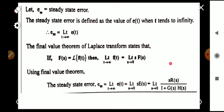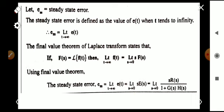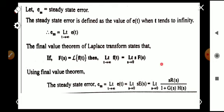We can apply the Final Value Theorem of the Laplace transform here. By applying it, the limit as t→∞ of e(t) equals the limit as s→0 of s·E(s). Substituting the value of E(s), the steady state error E_ss is defined as: E_ss = lim s→0 of s·R(s) / [1 + G(s)·H(s)]. This is the actual steady state error equation.